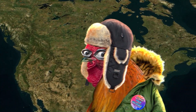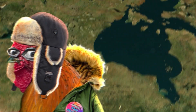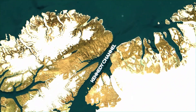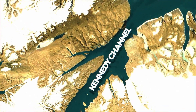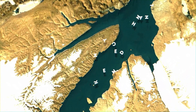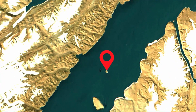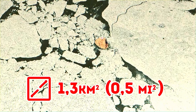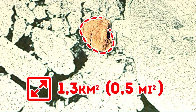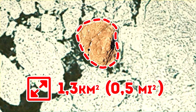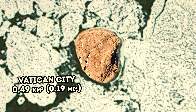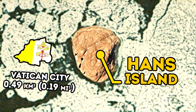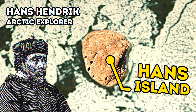Let's put on warm jackets and hats and move north to Canada. In the Canada Channel, between Canada and Greenland, there is a small uninhabited island. The area of this island is 1.3 square kilometers — about three Vatican Cities.